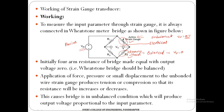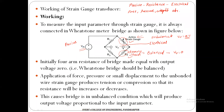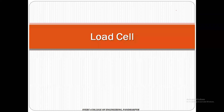In summary, the strain gauge is passive — because an external source is required; resistive — because its resistance changes under applied force; and an electrical transducer — because its output is an electric signal. Applications include measurement of force, pressure, weight, and more. This concludes our discussion of the strain gauge.